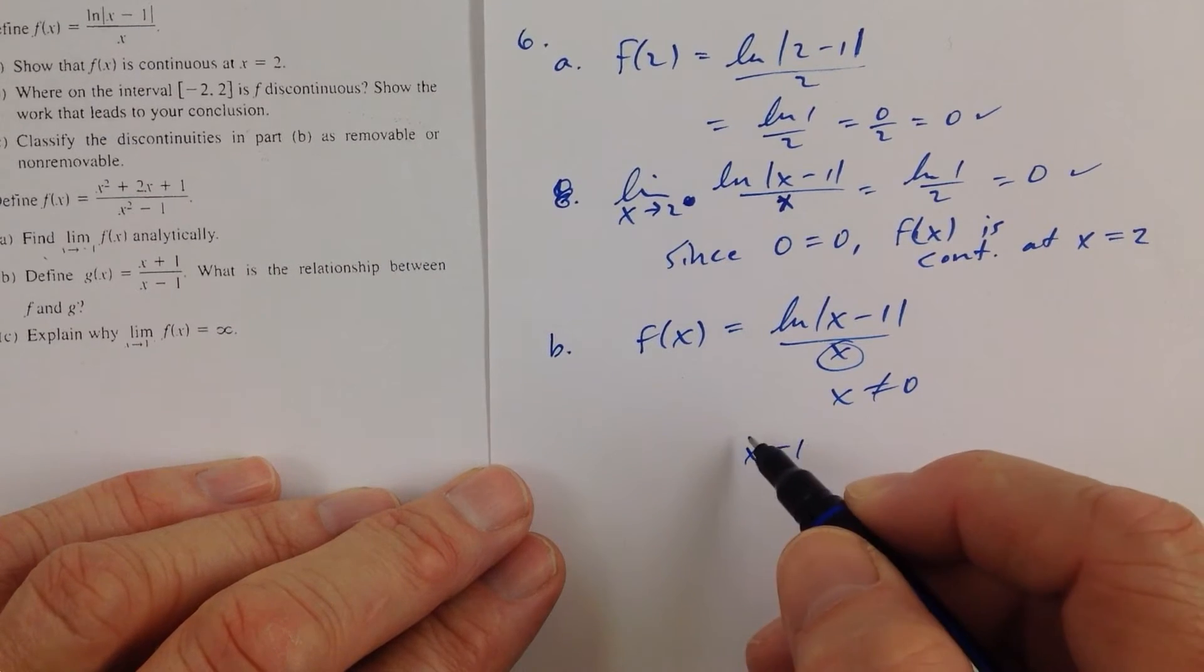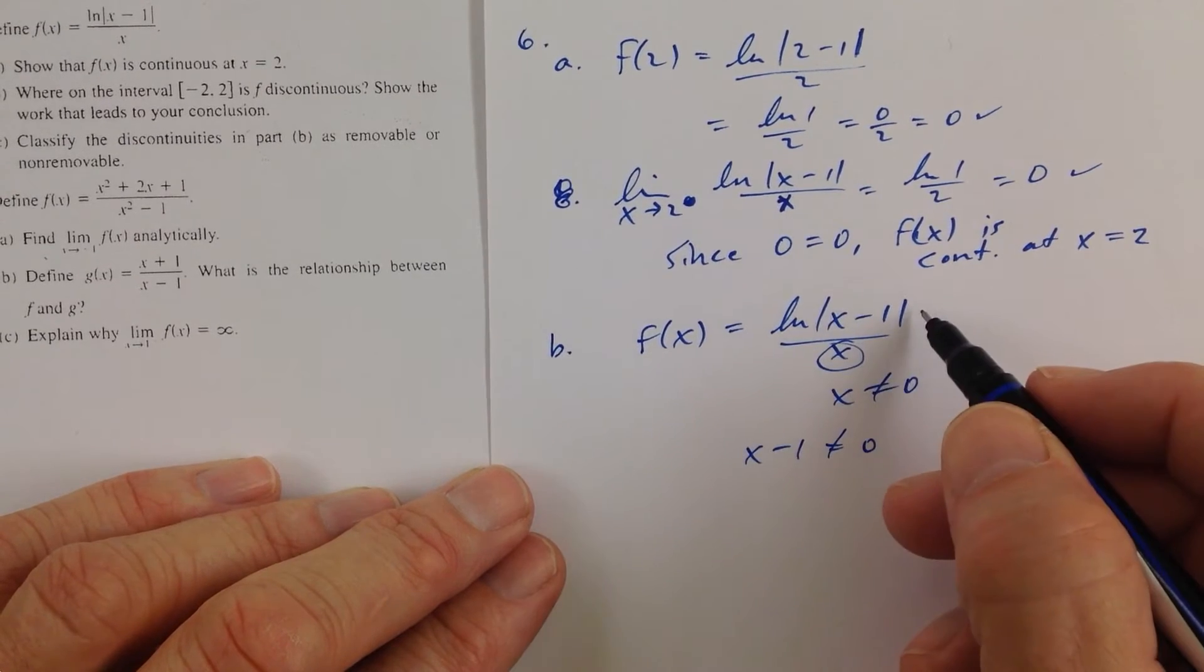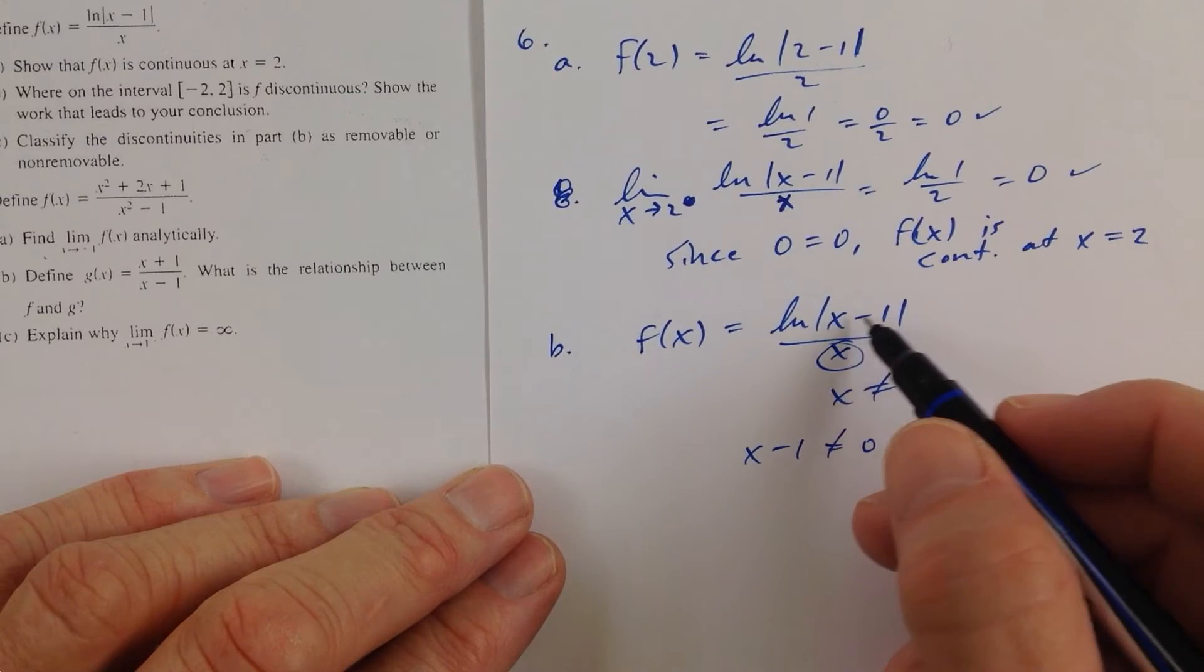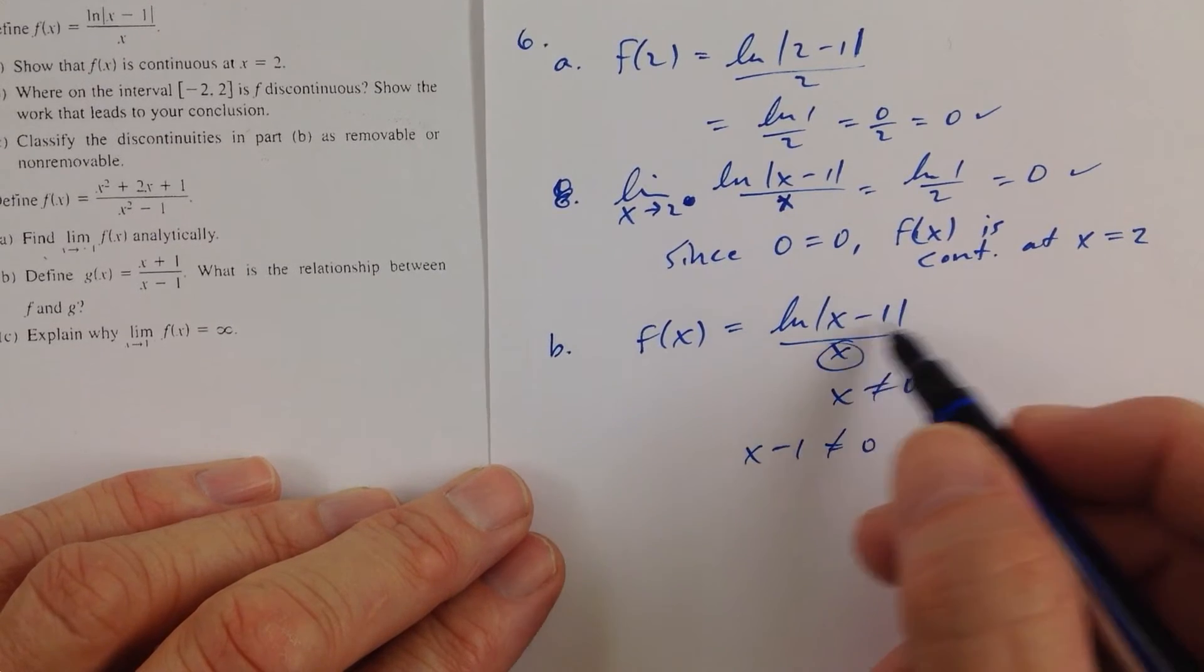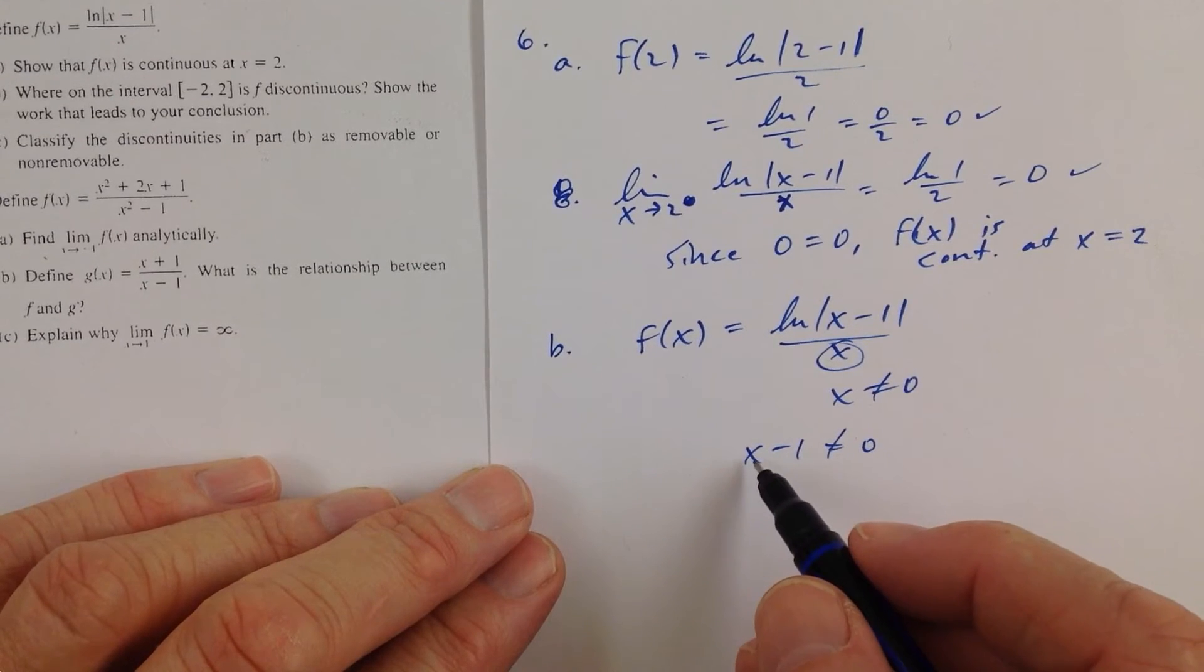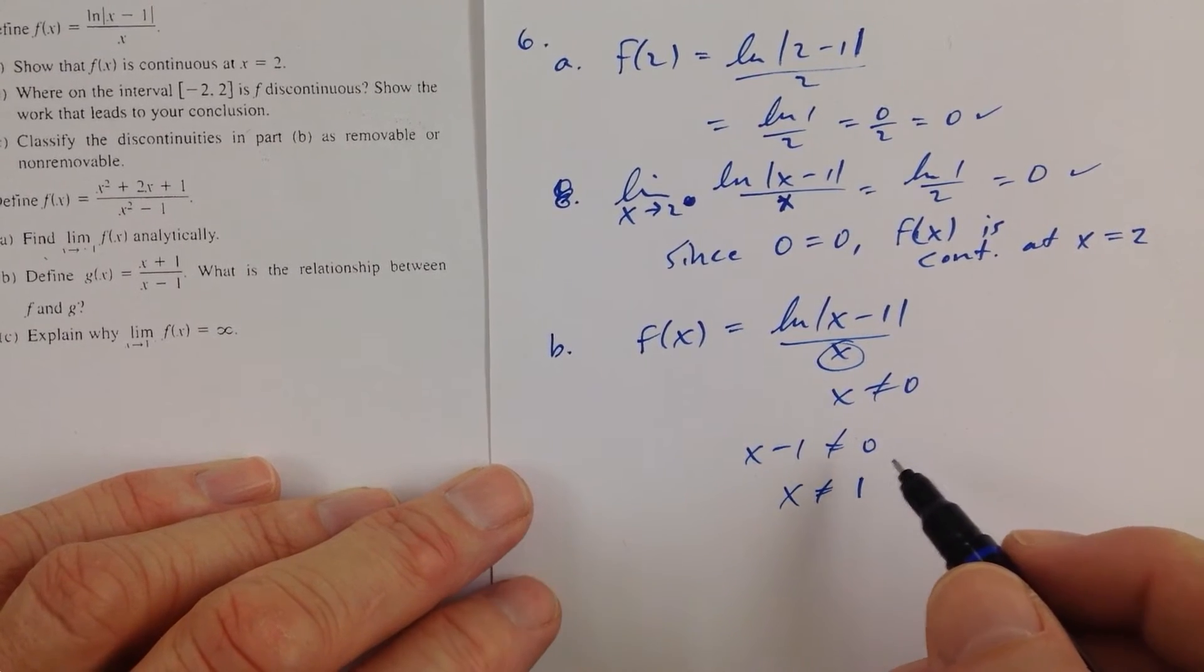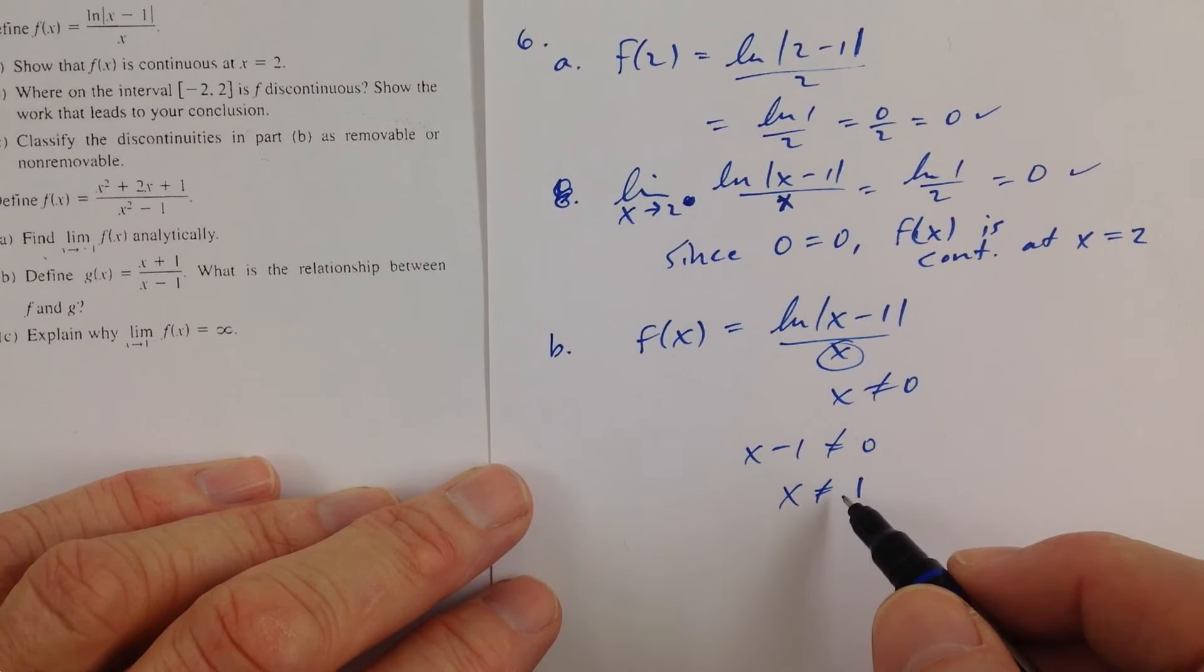And then x minus 1 is not allowed to equal 0 either. The absolute value bars are going to guarantee that when x minus 1 is not equal to 0, then whatever you take the absolute value of here is going to be a positive number, so we're good there. We just can't have x minus 1 equaling 0, so x is not allowed to equal 1.